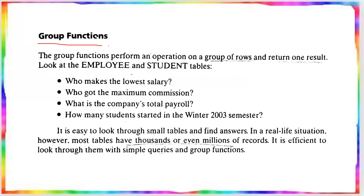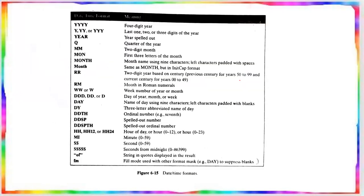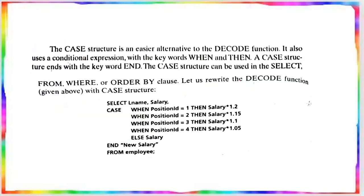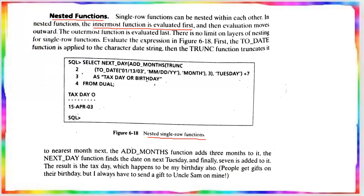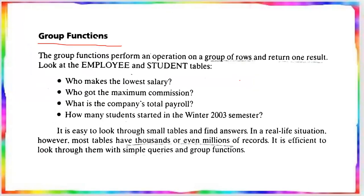The next topic is group functions. Unlike single row functions, group functions perform an operation on a group of rows and return one result. For example, from an employee database, you can find out who makes the lowest salary, who got the maximum commission, and what is the company's total payroll.